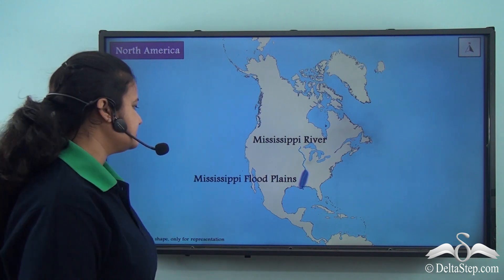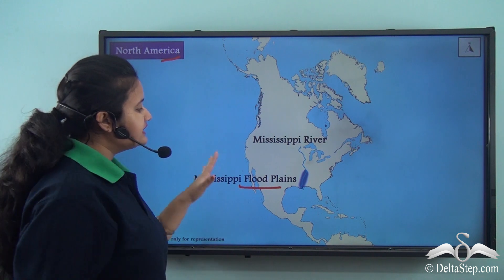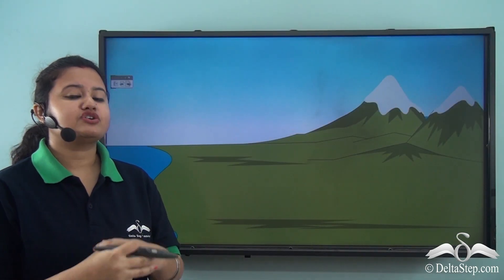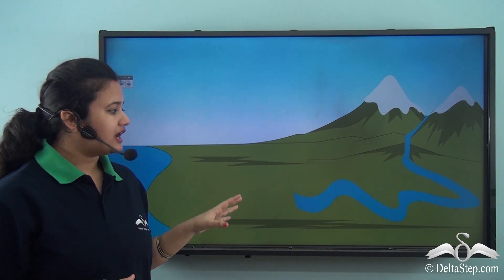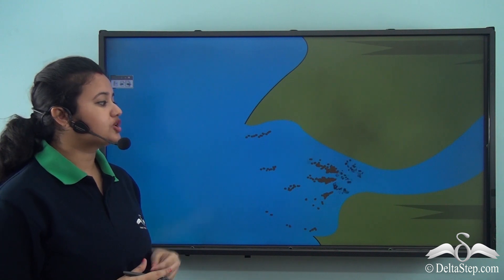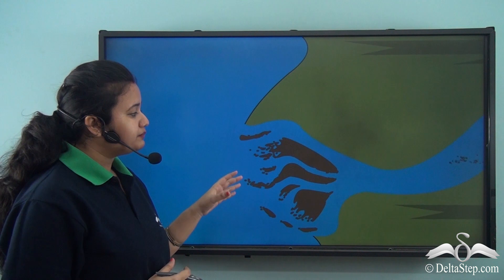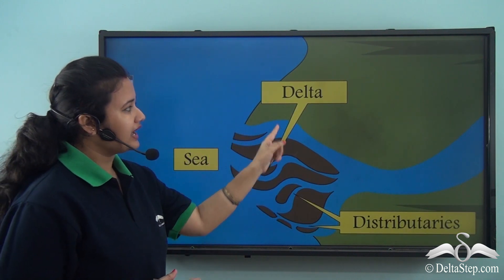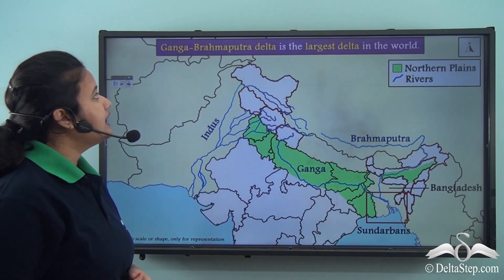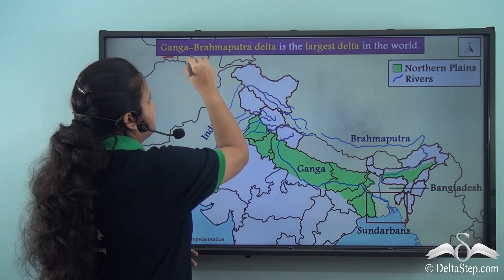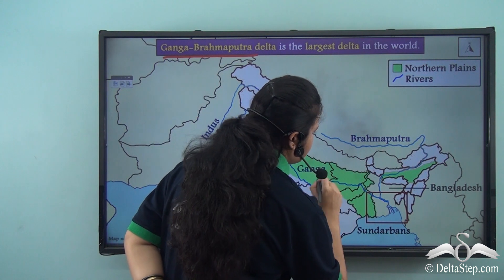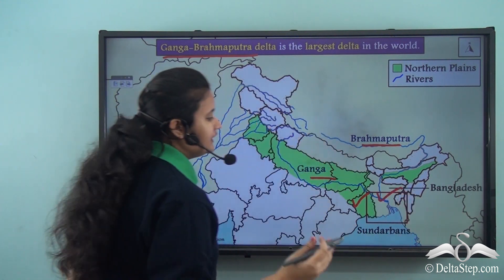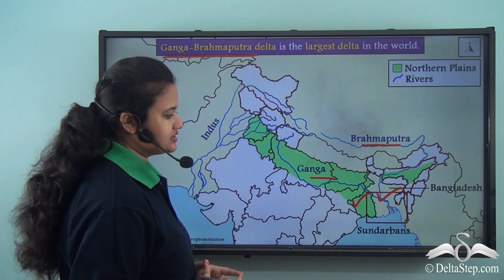A classic example of a flood plain is the Mississippi Flood Plains of North America, formed by the flooding of the Mississippi River. In its lower course, the speed of a river reduces — it spreads out and discharges water through several channels called distributaries, depositing sediments of silt and alluvium between these channels. This forms a triangular-shaped plain known as a delta. The world's largest delta is the Ganga-Brahmaputra Delta, also known as the Sundarbans, which spreads across India and Bangladesh.